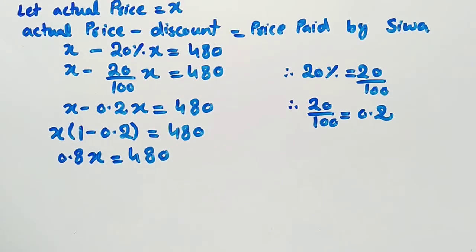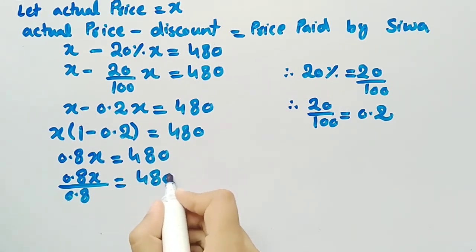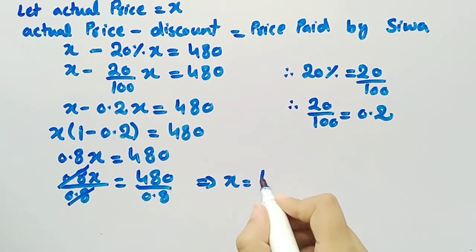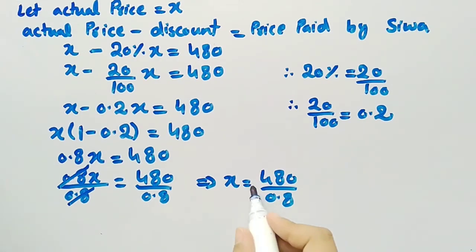Now we will divide both sides by 0.8. We get 0.8 times X divided by 0.8 equal to 480 divided by 0.8. The 0.8 is cancelled out, so we are left with X equal to 480 divided by 0.8. When we divide 480 by 0.8 using a calculator, we get X equal to 600.